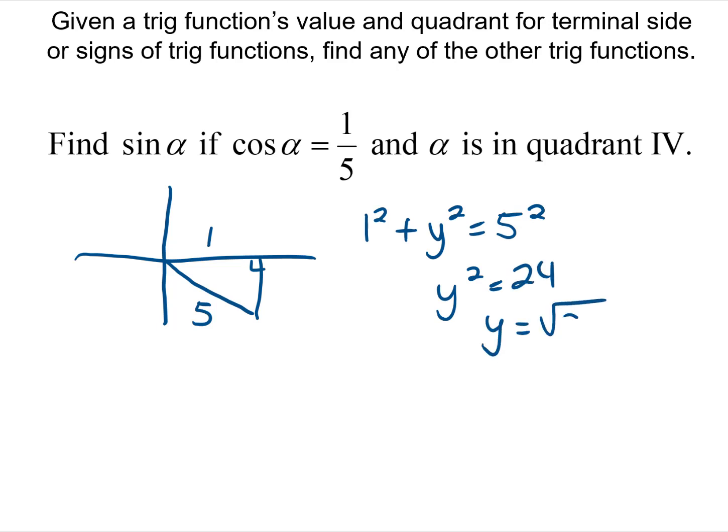So y is the square root of 24 and 24 is 4 times 6 so we're going to square root the 4. It'll come out in front as a 2 and the 6 will be under. So this side is 2 square roots of 6.